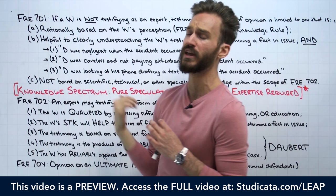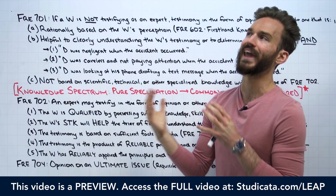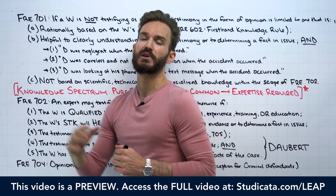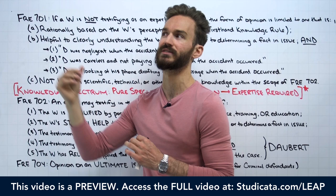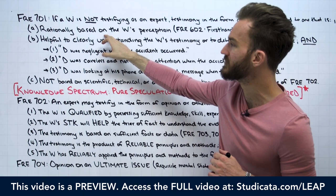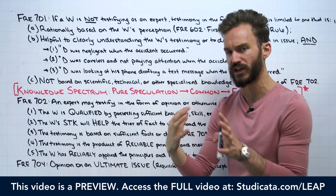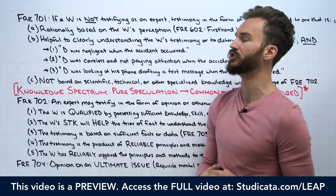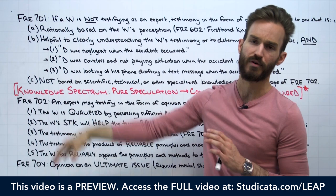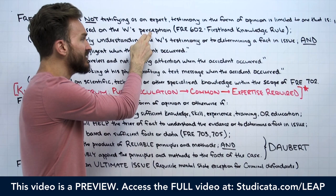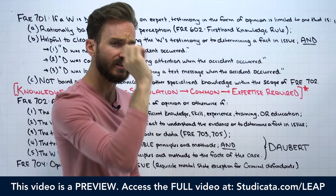The only real exception would be Rule 801(d)(2). For example, if a person charged with murder confessed to a witness, that witness can take the stand and say the defendant confessed to them — because that's based on the witness's perception of hearing. But for the most part, a witness giving an opinion must have firsthand knowledge — they themselves had to see it, hear it, smell it, taste it, or feel it.